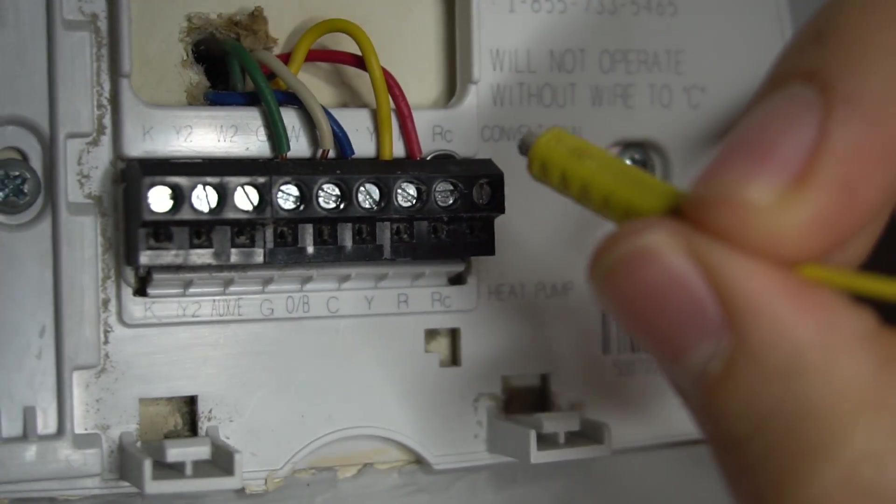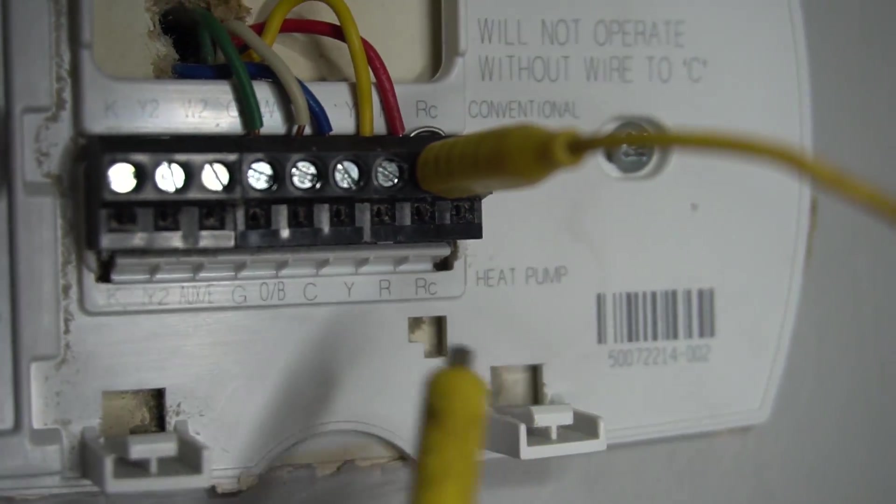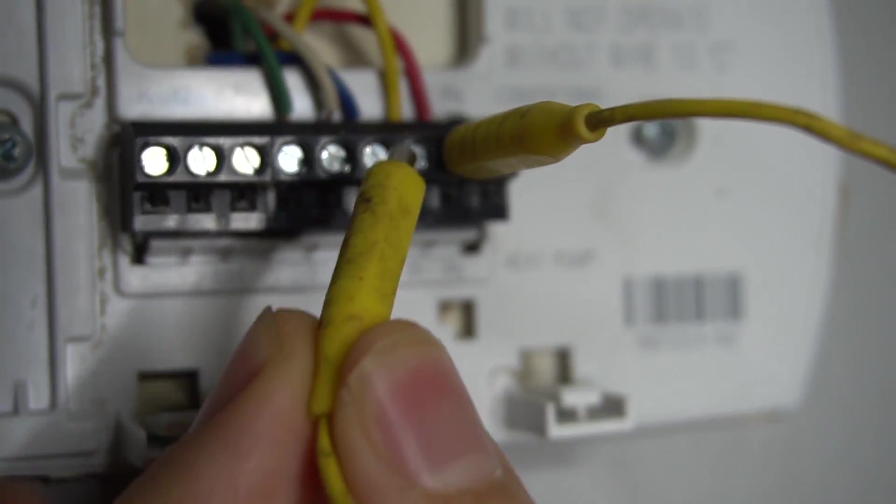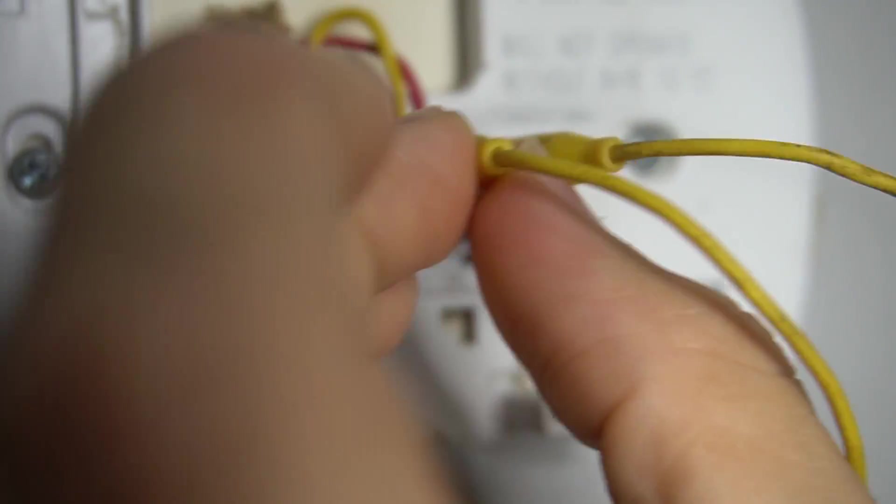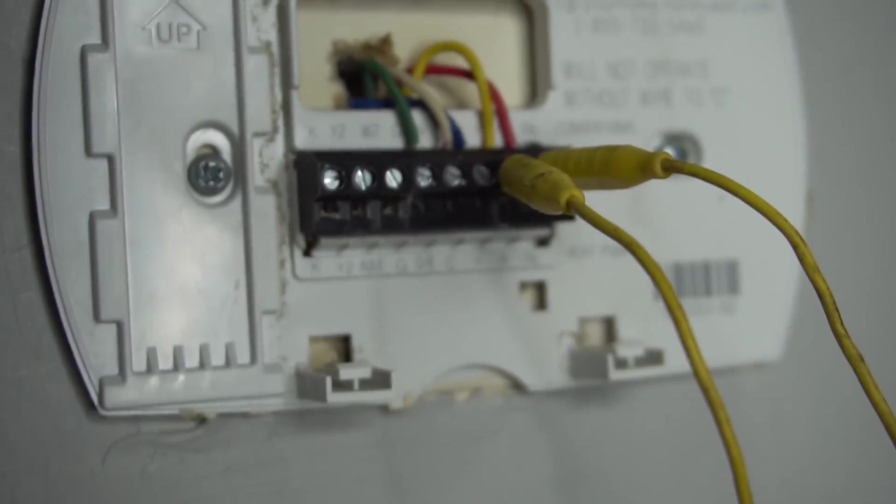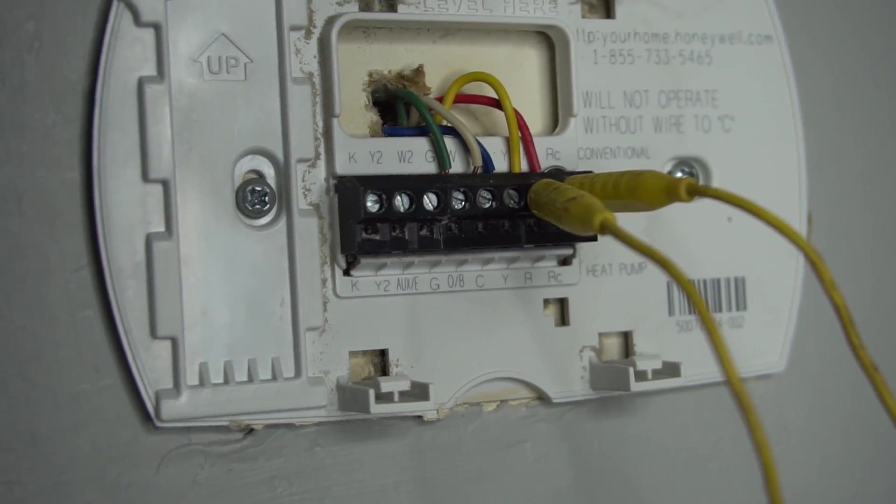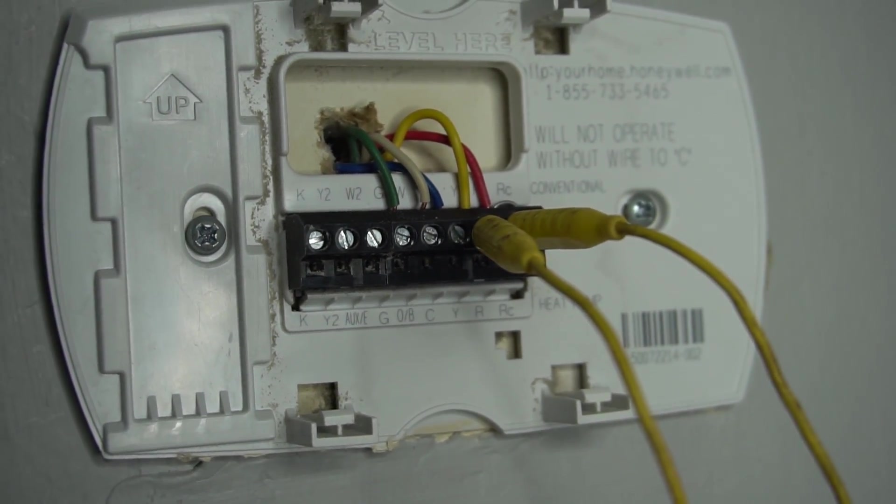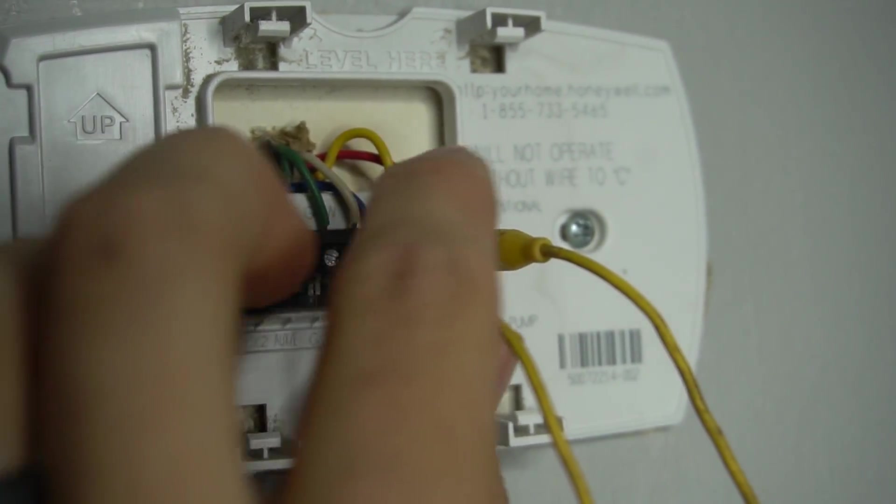You'll jumper R to Y. And right here, everything's labeled on the bottom of mine. I'll jumper R to Y, and that should bring my air conditioner on. If you hear your air conditioner come on, you can go downstairs, go outside, verify it. If only the AC comes on without the furnace, that's a good sign. At that point, I would disconnect the jumper.